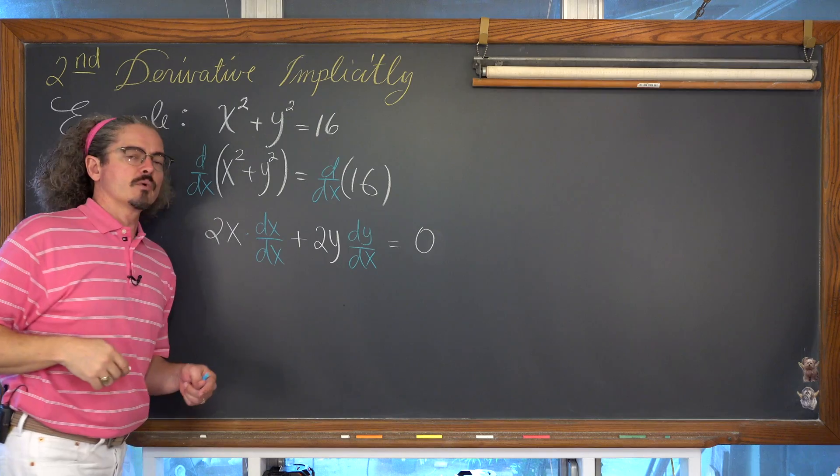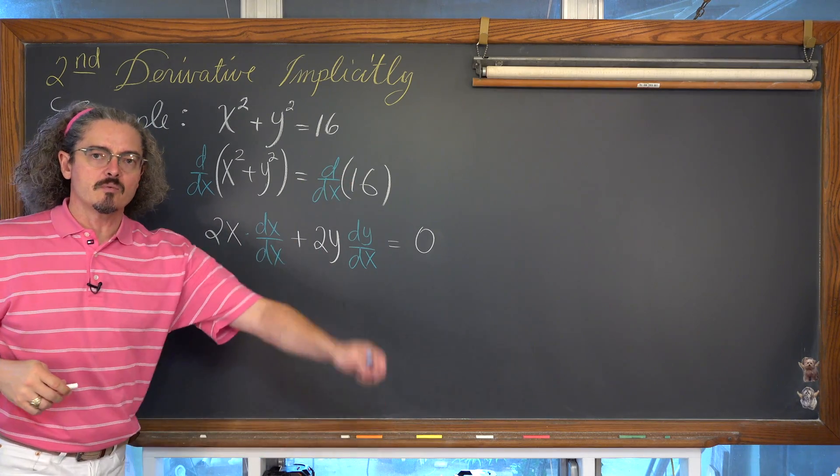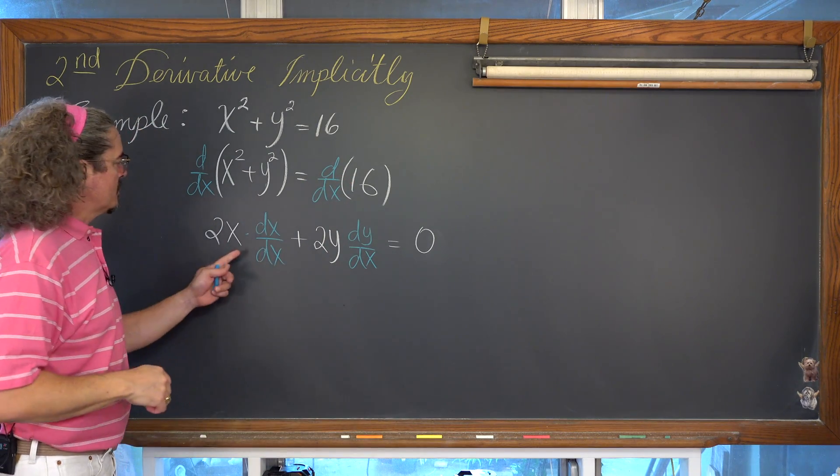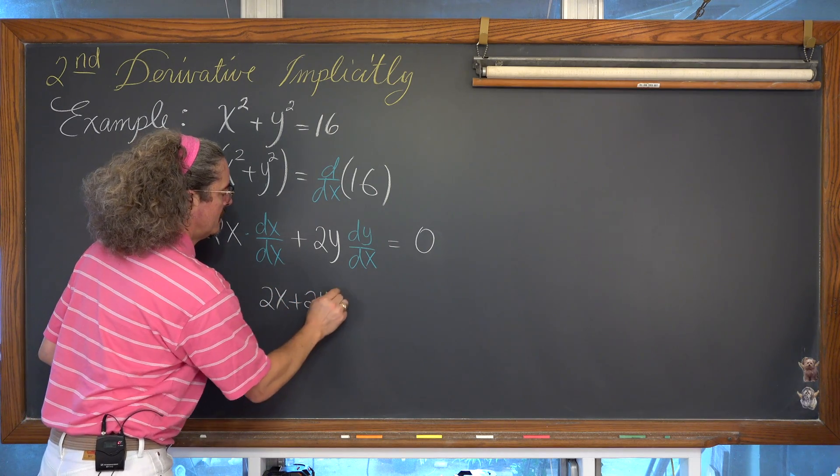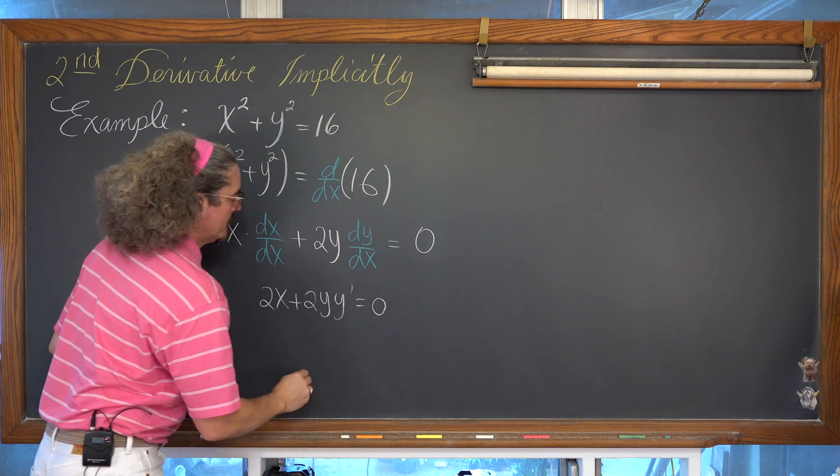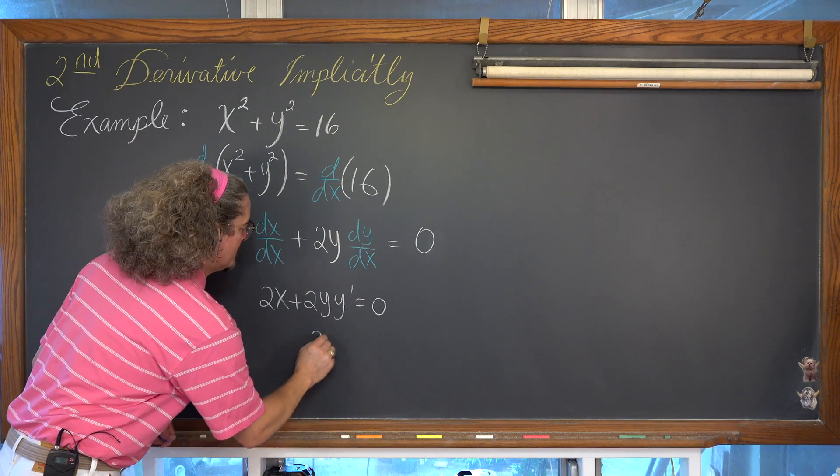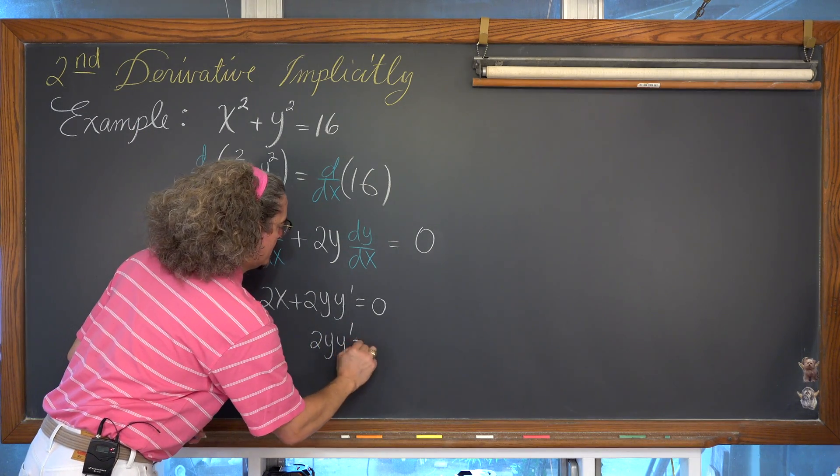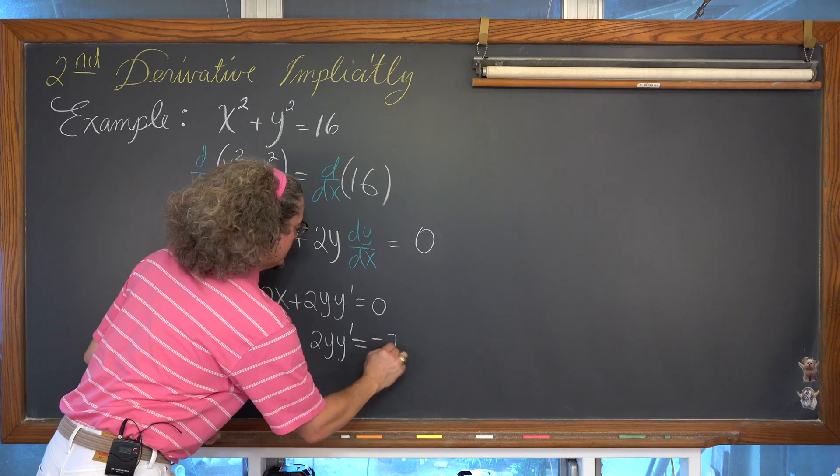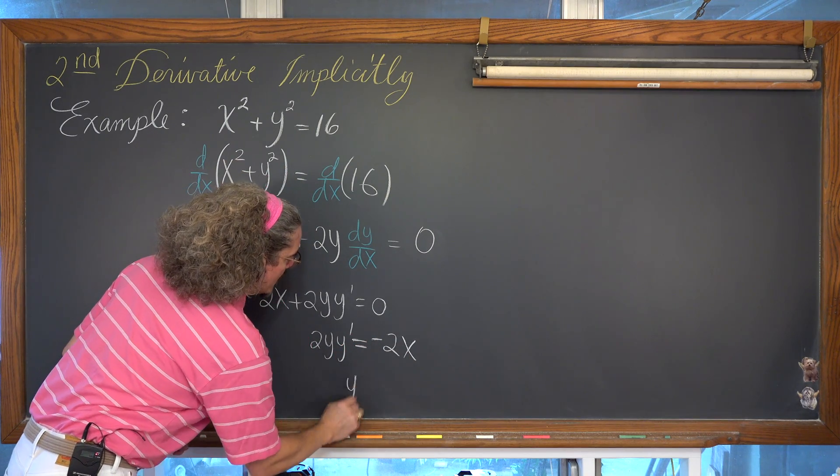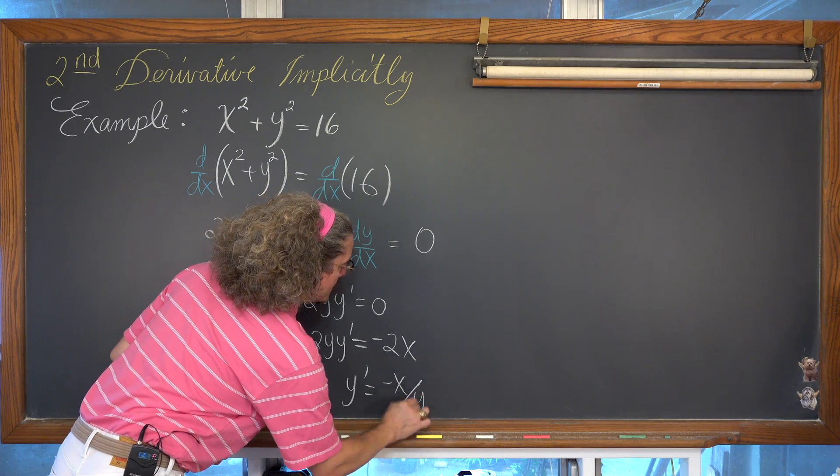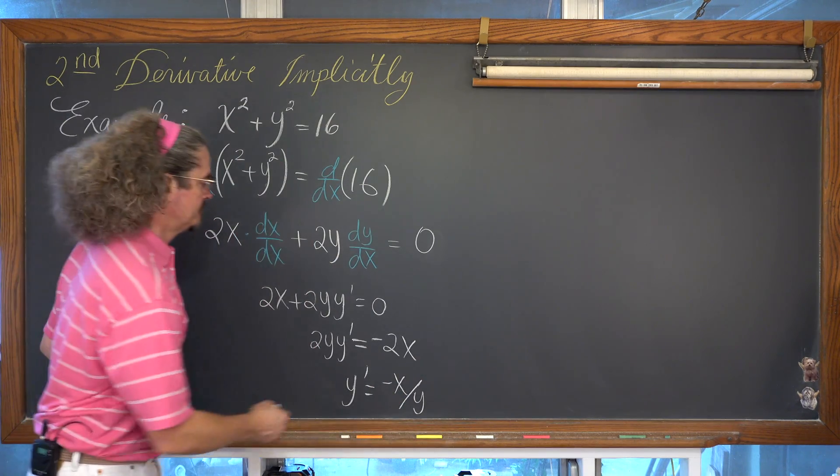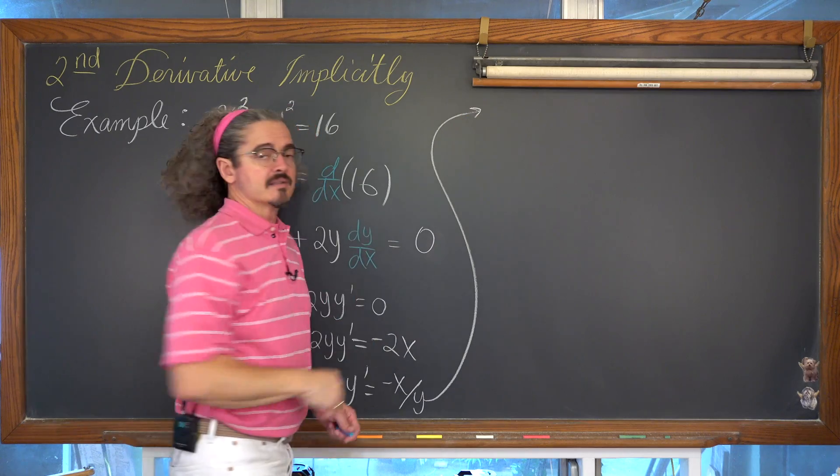On the right-hand side, we have the derivative of a constant one more time is equal to 0. So we have 2x plus 2y y prime is equal to 0. Subtracting both sides by 2x, we have 2y y prime is equal to negative 2x and ultimately we have y prime is equal to negative x over y. Great.